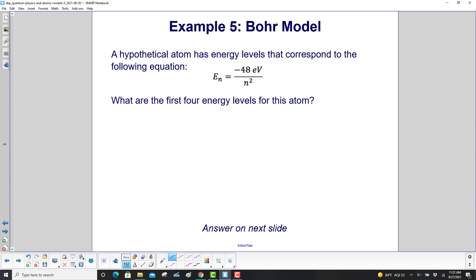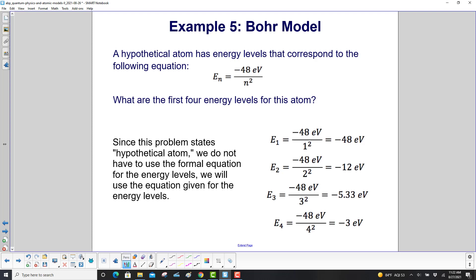A hypothetical atom has energy levels that correspond to the following equation. What are the first four energy levels for this atom? Since this problem states hypothetical atom, we don't need to use a formal equation for the energy levels. We'll just use this equation right here. So we have four energy levels. So that's 1, 2, 3, 4. Plug them into the equation. Ensure you square that each time. And here's our first four energy levels. And can you see how they get closer together the farther away from the nucleus? As you go down this way, it's farther away. In the beginning, you went from 48 to 12. So that's a difference of 36. Over here, it's a difference of only 2.33 eV. They get closer together the farther away from the nucleus.